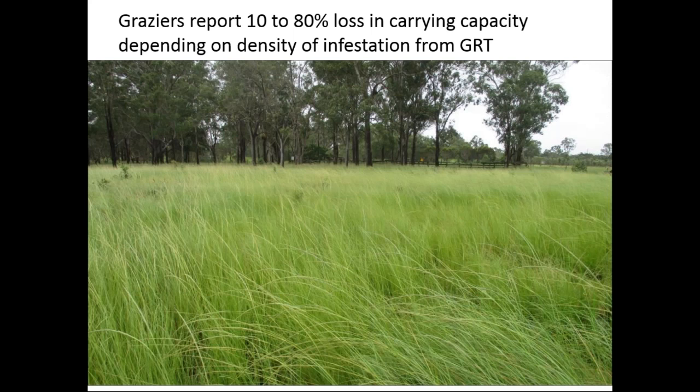Here's a nice green patch of Giant Rat's Tail Grass, immature but developing quickly after some rain. It can look nice and green, but even at that stage it's not particularly useful for grazing — it's still quite unpalatable and has low digestibility compared to more preferred species.